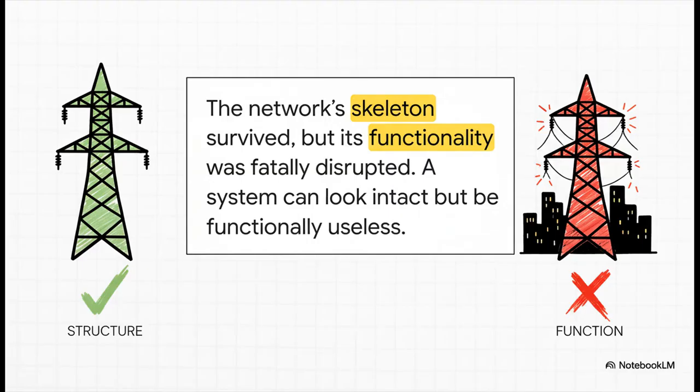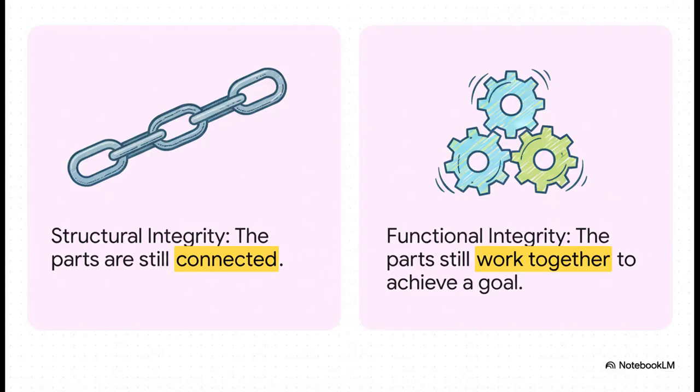Just look at what happened in New Orleans after Hurricane Ida back in 2021. Once the storm passed, the physical power grid, the skeleton of towers and wires, was actually mostly still standing. Structurally, you'd look at it and think, okay, that's not so bad. But functionally, it was completely dead. The flow of electricity, the information, the coordination needed to run it, all gone. And that, right there, is the key difference we're talking about.